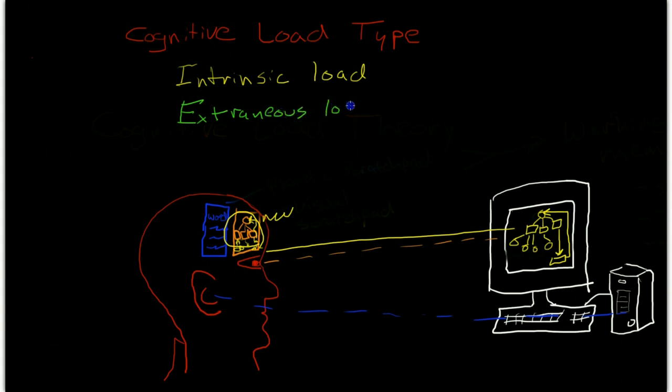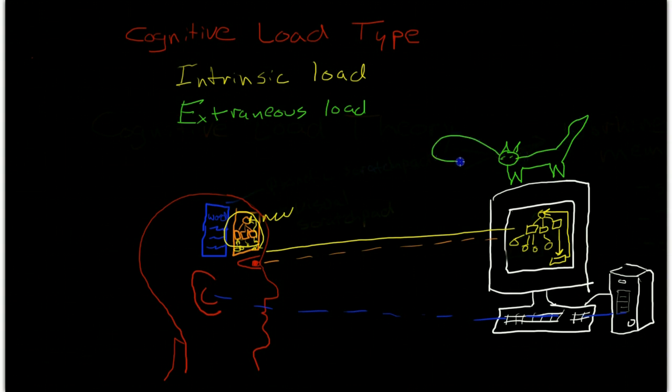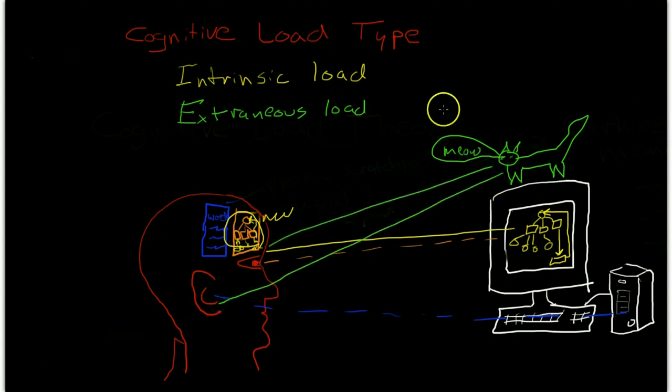The next type of cognitive load is called extraneous load. Extraneous load is essentially load on the working memory that is completely unrelated to the learning task at hand. So it is essentially a distraction from the learning process. For instance, this person's cat jumped up on his computer screen and started meowing and begging for food. The working memory of our learner here is partially loaded by this extra information.